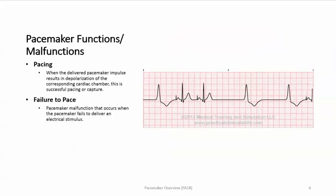Now we'll talk about pacemaker functions and how it can malfunction. The first function is pacing — this is when the delivered pacemaker impulse results in depolarization of the corresponding cardiac chamber. This is called successful pacing or capture. On the ECG we identify these as atrial pacer spikes or ventricular pacer spikes.